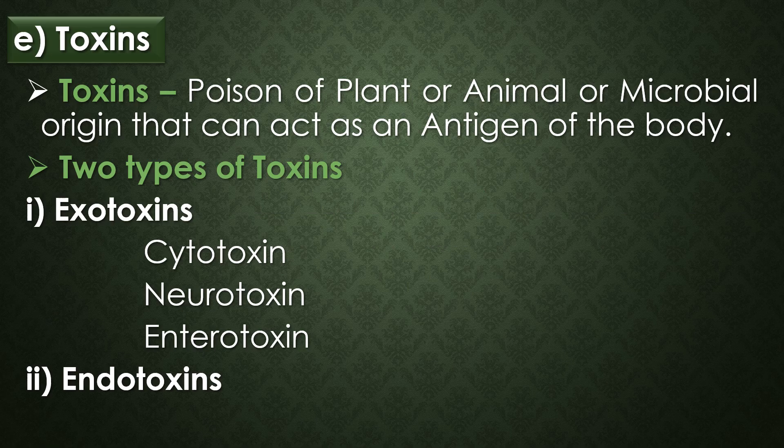The fifth and final virulence factor is toxins. Toxins are poisons of plant, animal, or microbial origin that can act as antigens in the body. Basically, toxins are of two types: exotoxins and endotoxins. Toxins like cytotoxins, neurotoxins, and enterotoxins are classified under the exotoxins category.